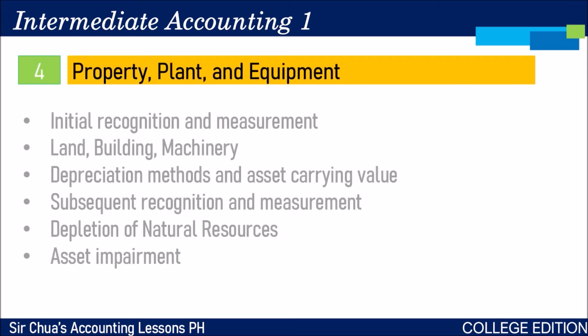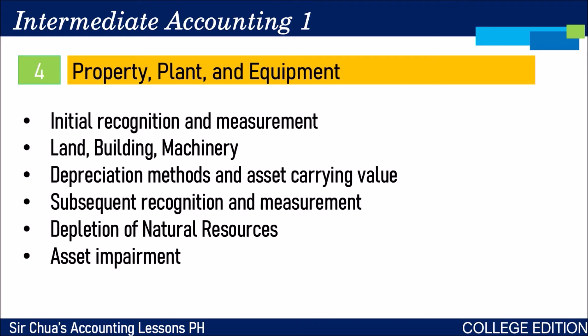For property, plant, and equipment, we'll discuss how to properly recognize and measure PPE acquired — covering land, buildings, and machinery — and different depreciation methods. Not just the straight-line method you already know, but also the units of production method, the sum of the years digit method (SYD), and how to compute carrying value. We'll cover subsequent recognition and measurement at the end of the reporting period, and also tackle depletion of natural resources and impairment of property, plant, and equipment — when can you say that an asset is impaired?